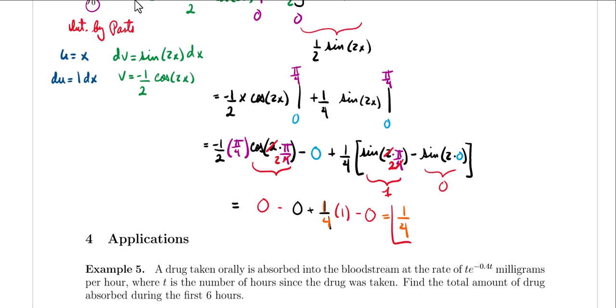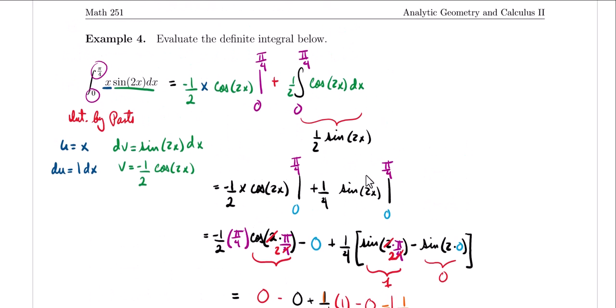So our final result is simply positive 1/4. We evaluated our first definite integral involving integration by parts. As you can see, we're following the same formula — the only difference is that once we get u and v, we still need to use the limits of integration to evaluate them and find their difference.